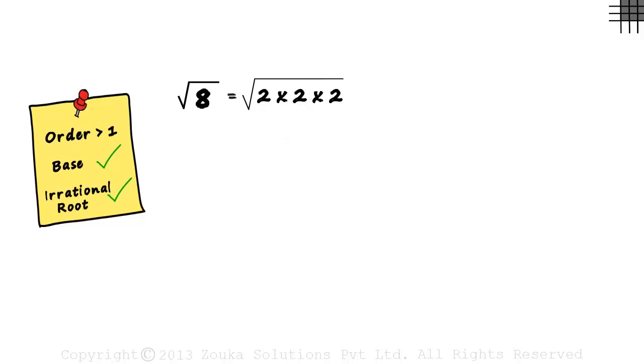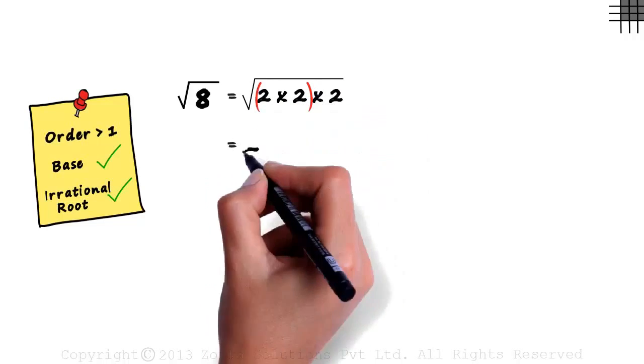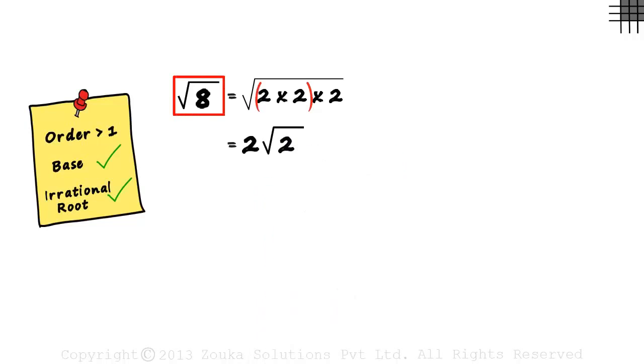Here we make a pair of the number two. Taking one two outside, we write it as two root two. So root of eight can also be written as two root two.